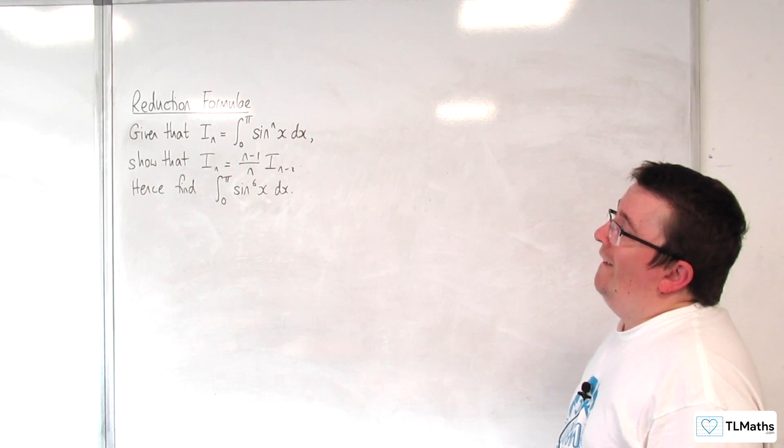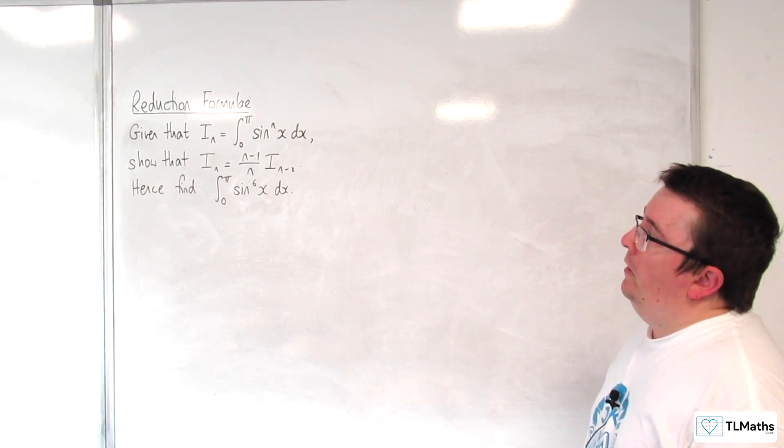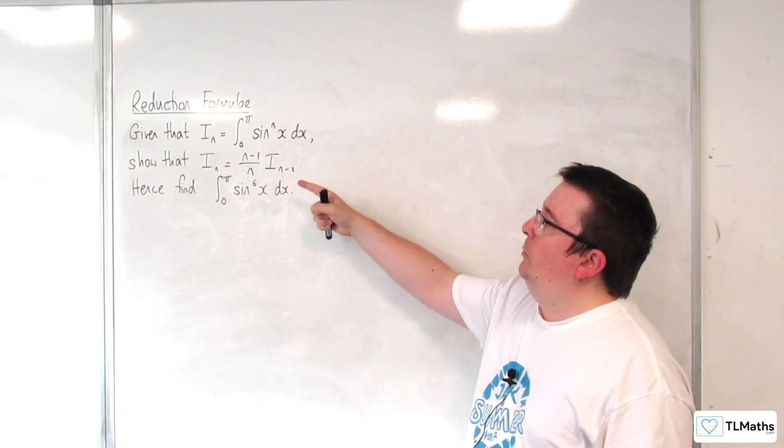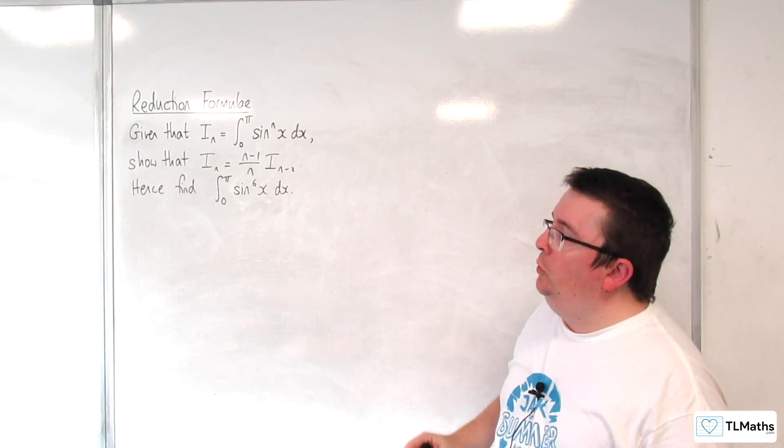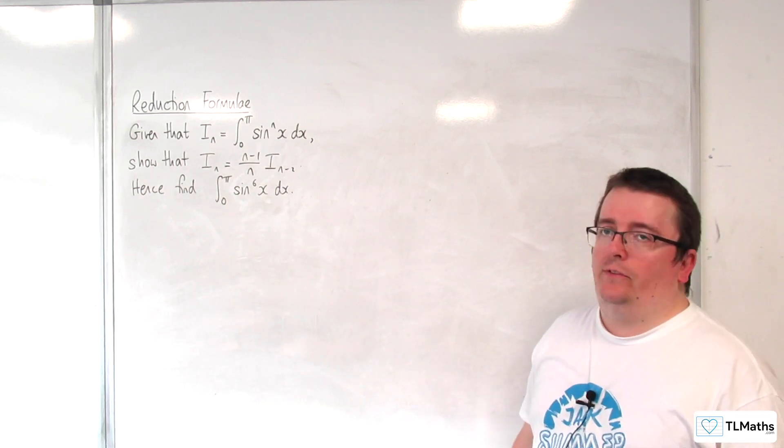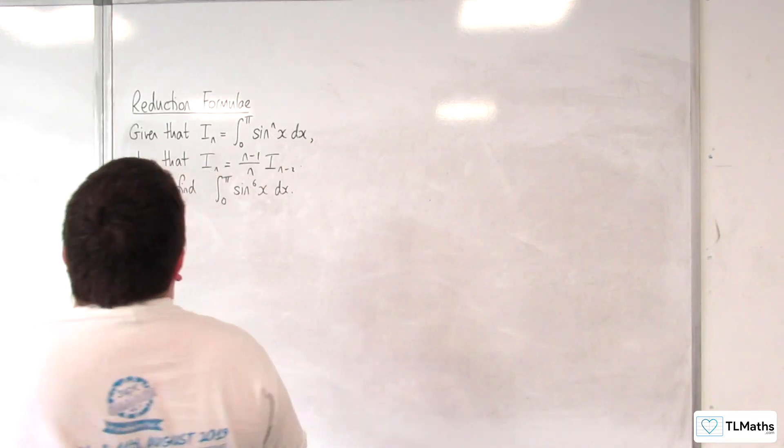In this video, given that I_n equals the integral from 0 to π of sin^n(x) dx, show that I_n equals (n-1)/n times I_(n-2), hence find the integral from 0 to π of sin^6(x) dx.